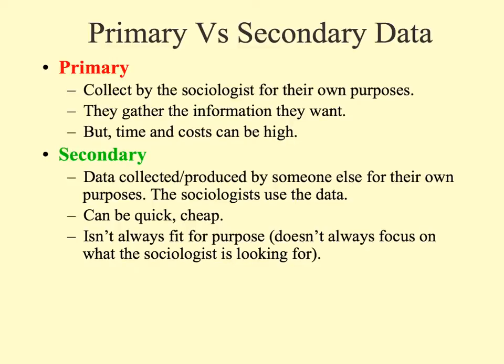The sociologist might use secondary data because it's accessible and they've got permission to use it. This can be a very quick and cheap way to do your research. However, the drawback is it's not always fit for purpose — it might not always focus on what the sociologist is looking for. For example, you could use census data collected every 10 years to analyse why immigration is going up in the UK, but none of the statistics will tell you exactly the motivation for people coming to the UK.